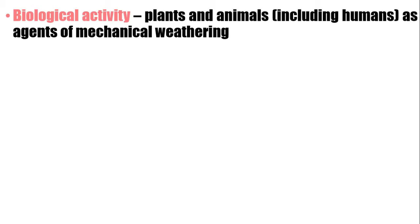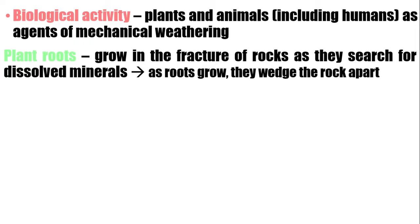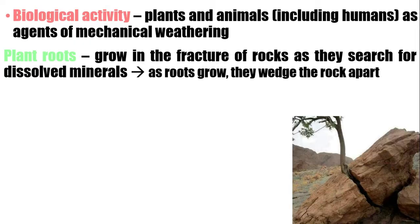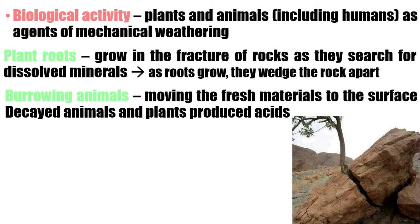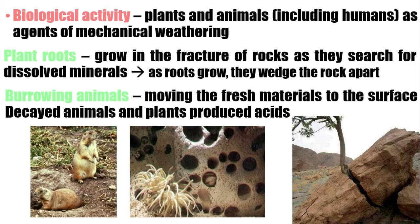Next, we have biological activity. This is caused by plants and animals, including humans, as agents of mechanical weathering. The first is plant roots — they grow in the fractures of rocks as they search for dissolved minerals, and as roots grow, they wedge the rock apart. You also have burrowing animals: moving fresh materials to the surface, decayed animals and plants produce acids. When they deposit on the rock, the acids cause the rock to break. Sometimes they also dig holes, which also causes mechanical weathering.